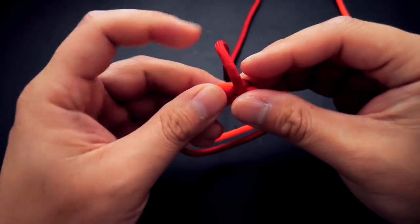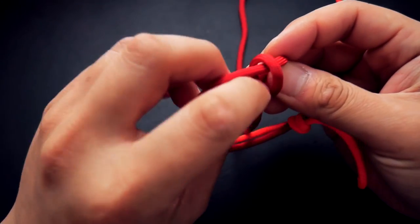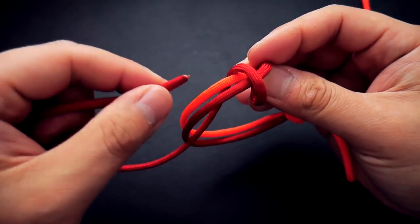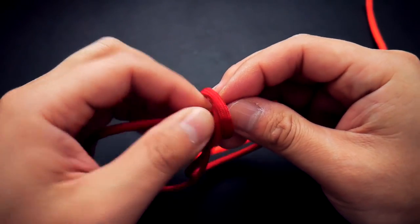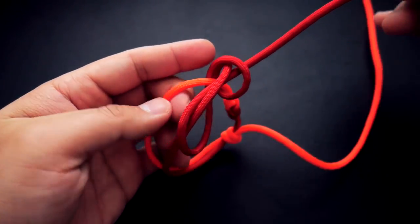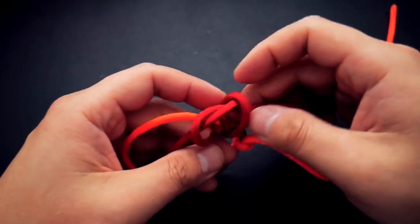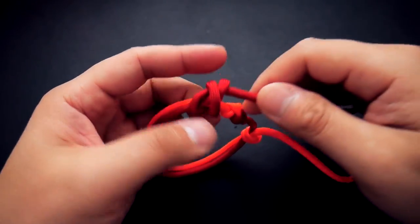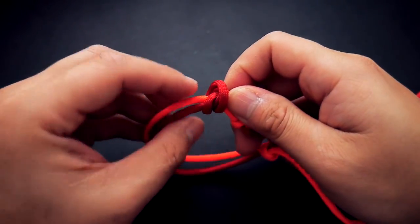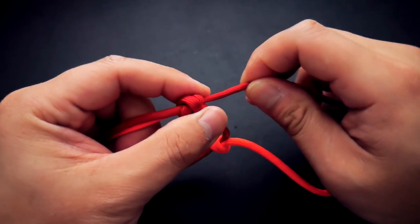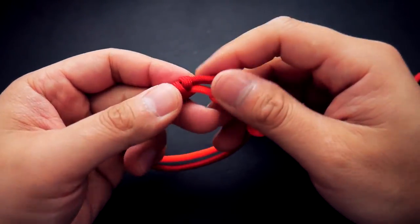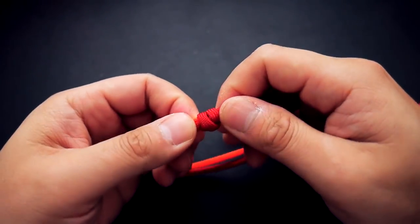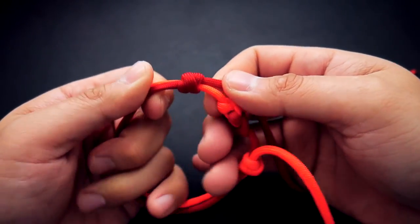I'm going to wrap it around twice, again forming that crossover X. Then of course you're going to put the cord underneath both those crossed-over cords. Super simple on this one. You're going to cinch up that second scaffold knot, and from here you can adjust your sizing.